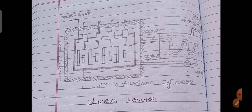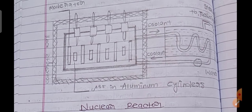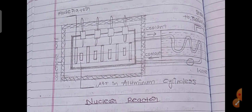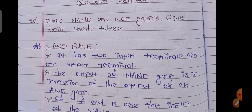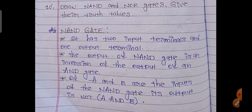Nuclear reactor diagram — see how nicely the diagram is drawn; you can copy the same thing. Draw NAND and NOR gates and give the truth tables.